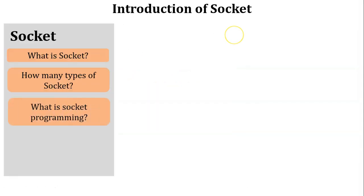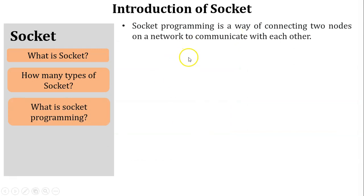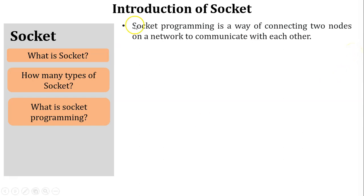Socket programming is a way of connecting two nodes on a network to communicate with each other. As per the definition, a socket is an endpoint when two programs communicate with each other on a network, and the socket is created on a particular machine or PC. Using socket programming, we are connecting two different nodes on a network for communication purposes.